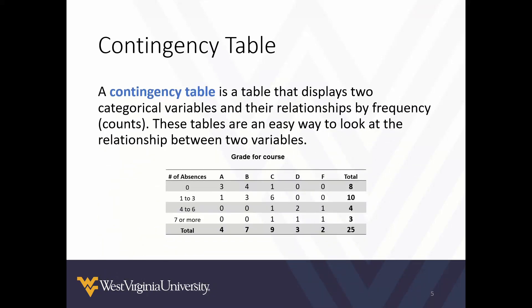A contingency table is a table that displays two categorical variables and their relationships by frequencies and counts. These tables are an easy way to look at the relationship between two variables.